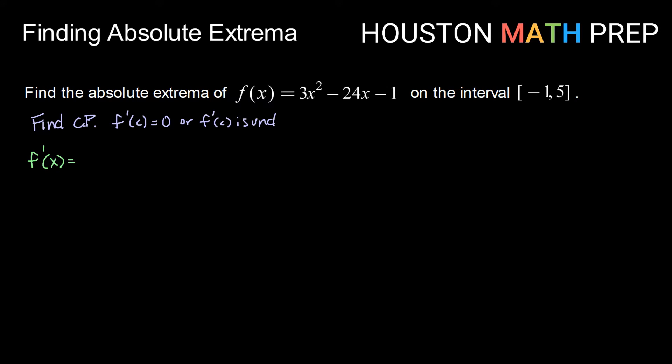So our f'(x) will be 2 times 3, or 6x, minus 24, minus 0, or just 6x - 24.